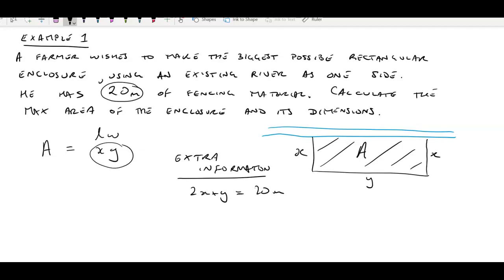I can rearrange that extra information equation to get Y by itself: Y equals 20 minus 2X. Then I can take that value for Y and substitute it into my area formula. So my area formula now looks like A equals X(20 minus 2X).